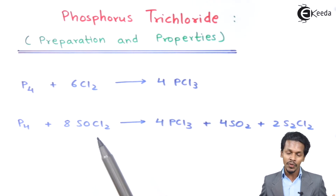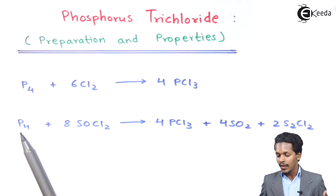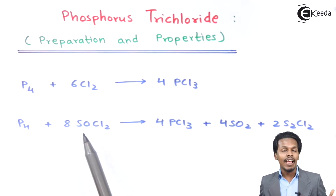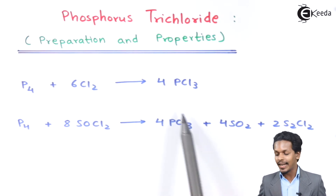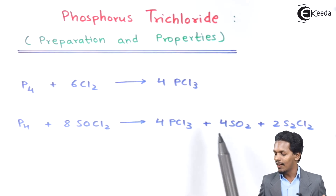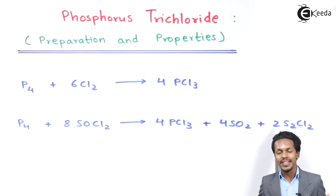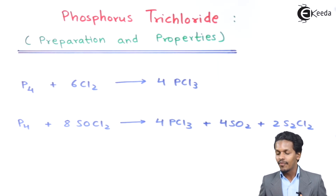There is another method also from which we can prepare phosphorus trichloride: whenever we treat phosphorus, that is white phosphorus, with 8 moles of SOCl2, we could get the main product — 4 moles of PCl3 — along with SO2 as a byproduct and S2Cl2. These are the two methods to prepare phosphorus trichloride.